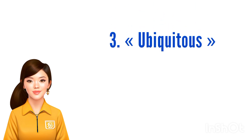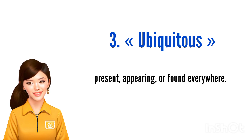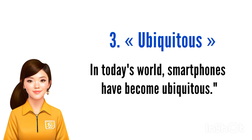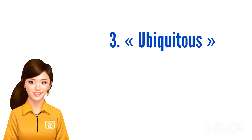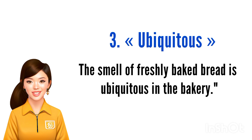The third word we will be learning is 'ubiquitous.' It is an adjective that means present, appearing, or found everywhere. For example, in today's world, smartphones have become ubiquitous. Another example could be: the smell of freshly baked bread is ubiquitous in the bakery.